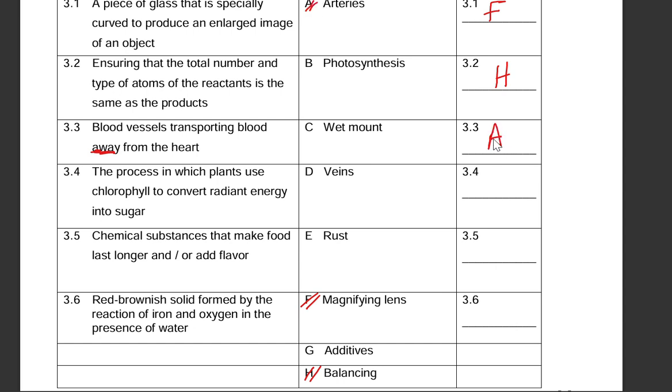3.4: the process in which plants use chlorophyll to convert radiant energy into sugar. Photosynthesis, that is B. 3.5: chemical substances that make food last longer and or add flavor. G, additives. That's G.